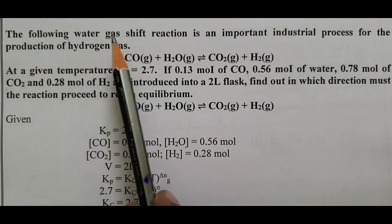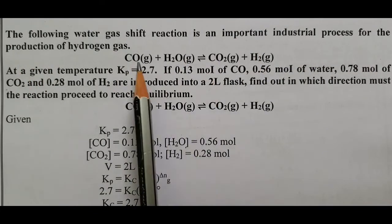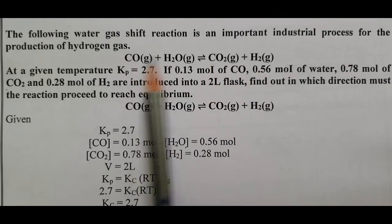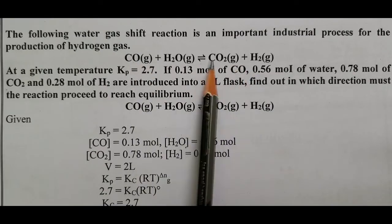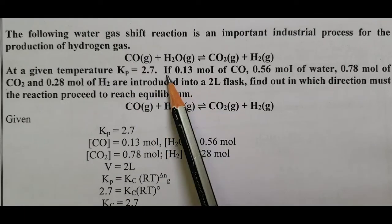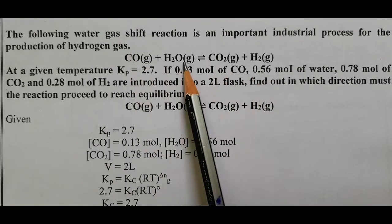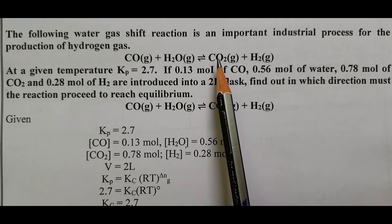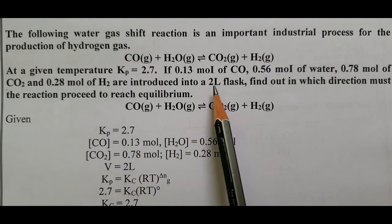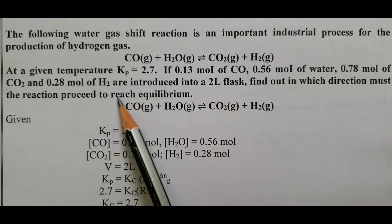Problem 3: The water gas shift reaction is an important industrial process for the production of hydrogen gas. Carbon monoxide plus steam gives carbon dioxide and H₂. At a given temperature, Kp = 2.7. If 0.13 mol CO, 0.56 mol H₂O, 0.78 mol CO₂, and 0.28 mol H₂ are introduced into a 2-liter flask, find out in which direction the reaction must proceed to reach equilibrium.